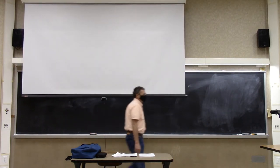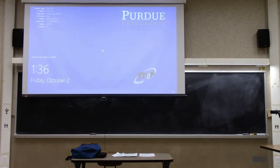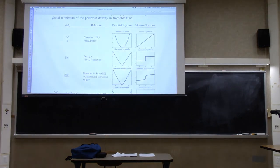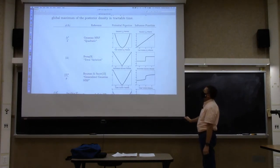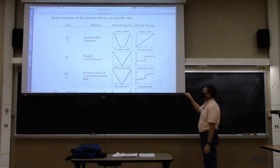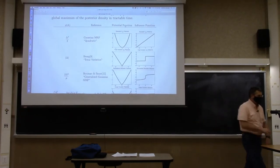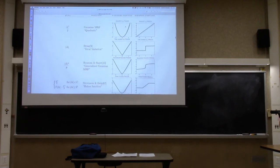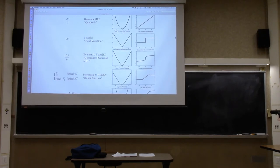Let me skim through this from a projection point of view. These are the different kinds of functions you can use. You can have quadratic, in which case the influence function is linear. You can have absolute value, which is called total variation.